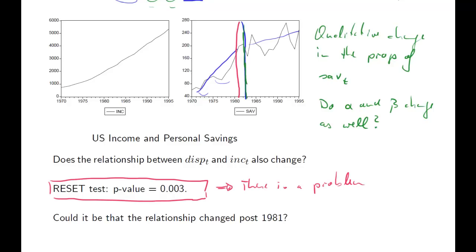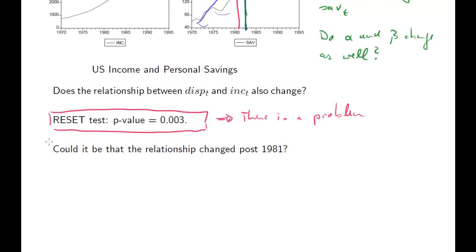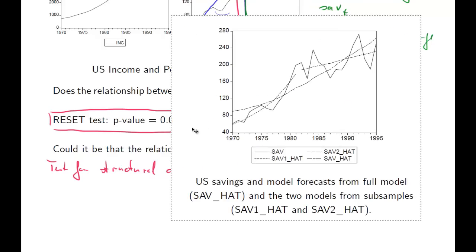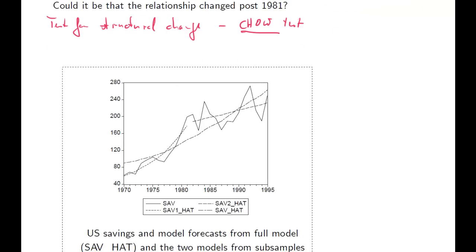So we will perform what is called a test for structural change. And this test we're going to do is called the Chow test. It's a very, very famous test.